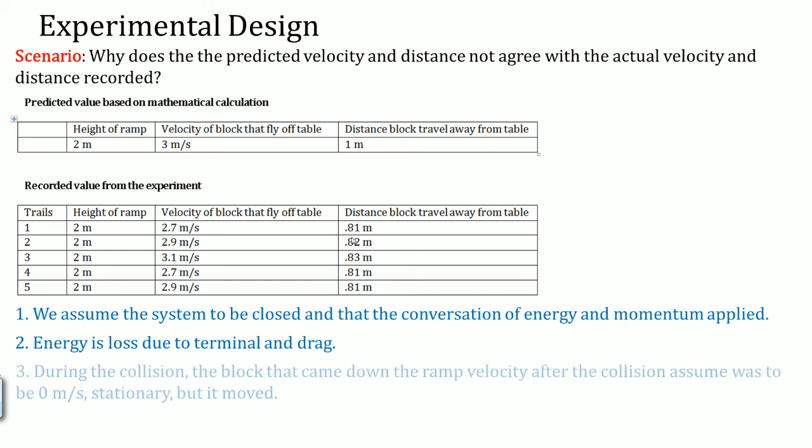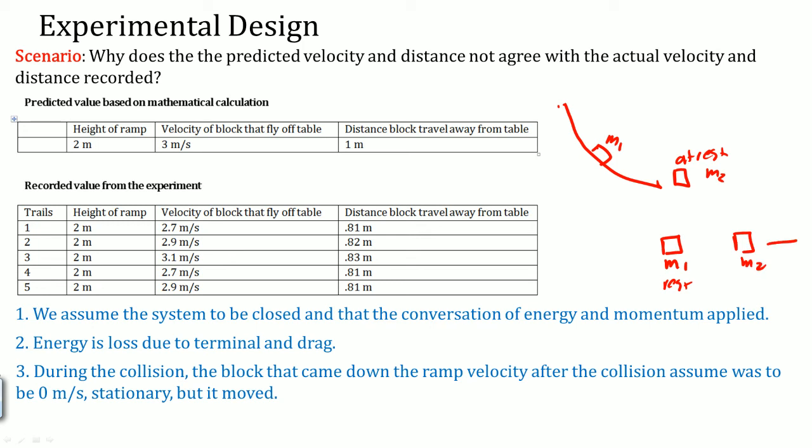During the collision, the block that came down the ramp is going to hit the other block. Remember, this was at rest. So in the end, in theory, M1 and M2, in theory you wanted M1 now to be at rest and M2 is going to go this way. In theory, M1, in reality, is not going to be at rest. It rarely will hit like that because, depending on how it collides, not all the velocity is going to be transferred.